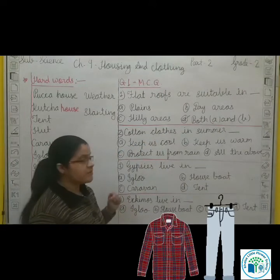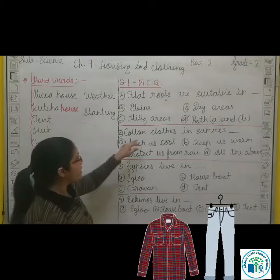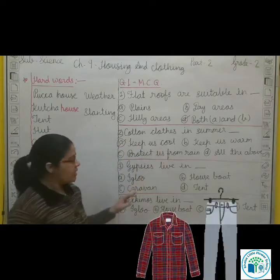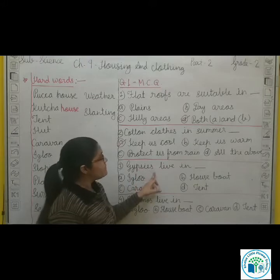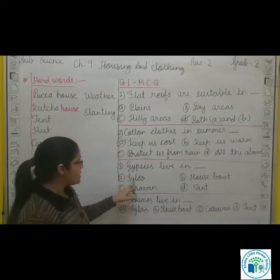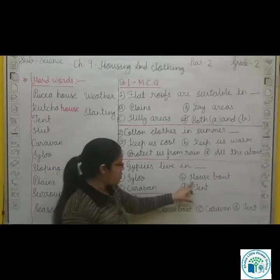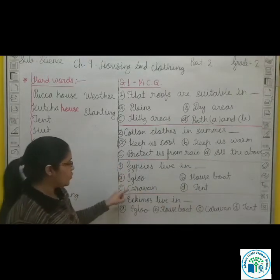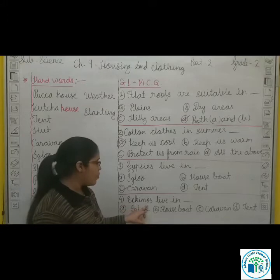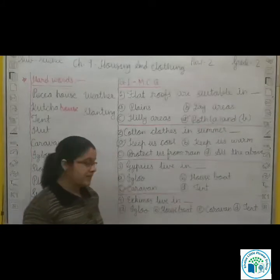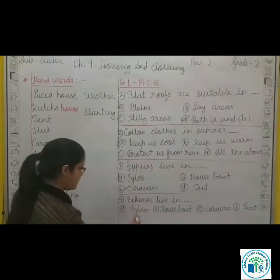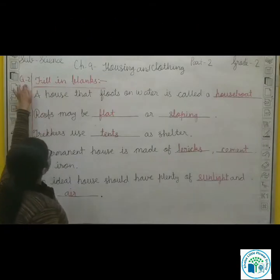G-Y-P-S-I-E-S, Gypsies. Gypsies live in Caravans. E-S-K-I-M-O-S, Eskimos live in Igloos. Option A: Igloo. Option B: Houseboat. Option C: Caravan. Gypsies live in Caravans. Eskimos live in Igloos, so Igloo is right.